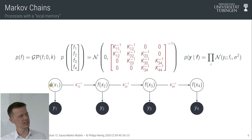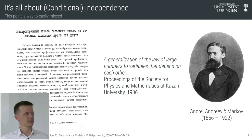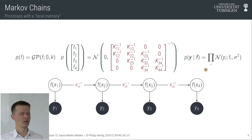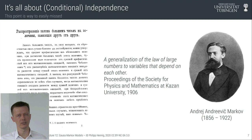Clearly this corresponds to the chain graph, which allows us to predict one variable into the future by conditioning on the previous observation and then predicting forward. At this point I should tell you what these models are called: they're called Markov models, or Markov chains. So this is a chain graph, but this specific kind of model is called a Markov chain.